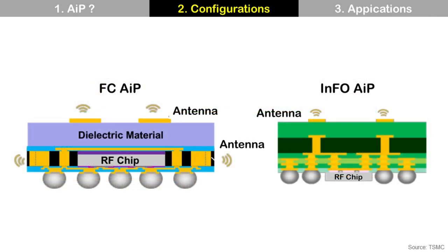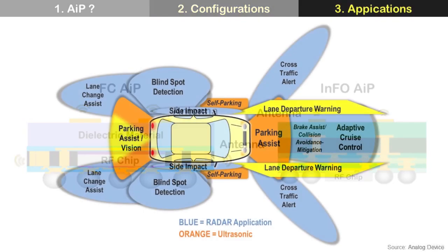These are AIP solutions from TSMC. They have Flip-Chip AIP and InFO AIP. InFO is a fan-out technology from TSMC.